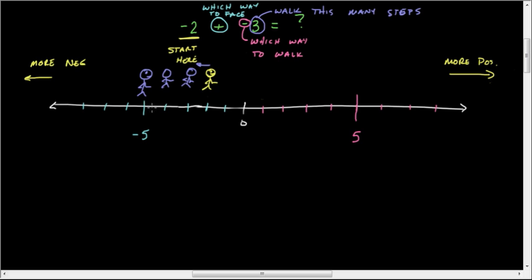He's still happy. So now, we've walked backwards 3 steps, and where are we? We are at the answer. We're right here at negative 5. And so, that's the answer to the problem. So you start at negative 2. You face towards the positive. You walk backwards. And you walk that far.